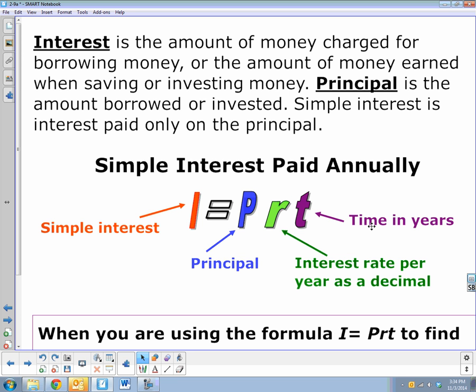Times t, time. And the time has to be in years. That is important because you can borrow something, you can borrow money for three months, but that's not three years. Three months and three years are very different. So this formula is set up to use time in years. If your time is not in years, you have to change it so it works with this formula.